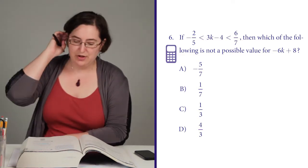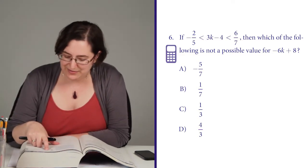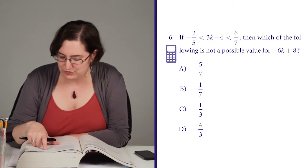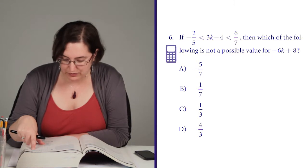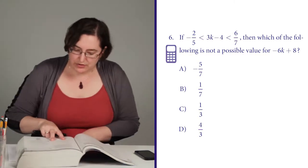I mean, I could solve for k and then change it into negative 6k minus 8, but I really don't need to because my original is already really close to that. All I have to do is multiply this by negative 2 in order to get to what they're asking me for. So I'm going to do that.